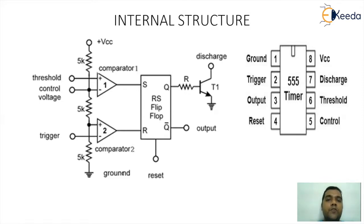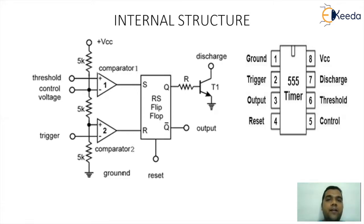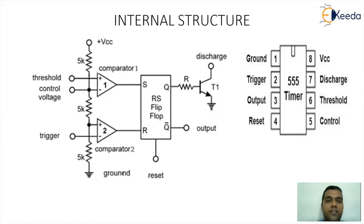The inputs to pins S and R are actually coming from two comparators. The first comparator is normally called the upper comparator and the second comparator is normally called the lower comparator. For the comparators, we require reference voltages. For that, we have a VCC supply connected externally to the chip, and that voltage will be used for terminal voltage determination with respect to three resistances each of 5 kilo ohm.